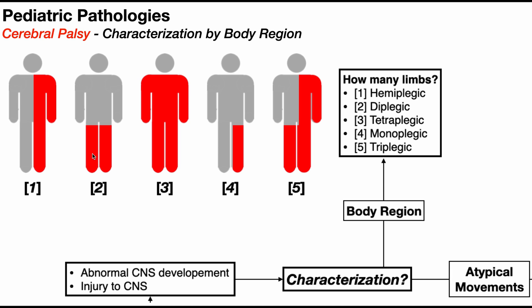If both of the legs are affected, this would be diplegic CP. Hemiplegic is used specifically when it's the arm and leg on the same side. If it's just both legs, that would be diplegic CP. Theoretically, you could have both arms affected, but it's much more common for it to be both legs.